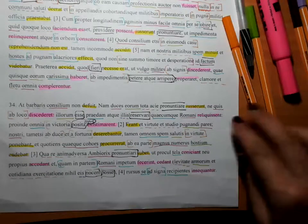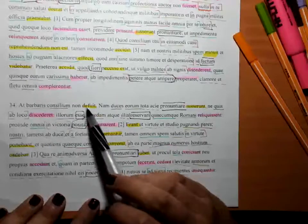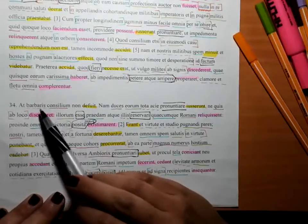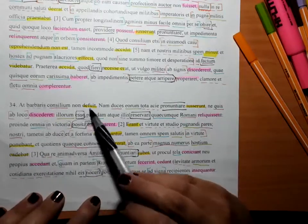Here we go, Julius Caesar 5.34. But the plan was not lacking to the barbarians - the barbarians' plan, dative of possession. The plan to the barbarians wasn't lacking.